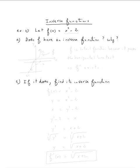So first question is, does f have an inverse function and why? We need to know that a function has an inverse function if it is one to one. So we need to check if f of x equal x cubed minus two is one to one. The easiest way is to graph it.